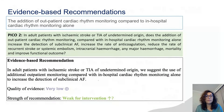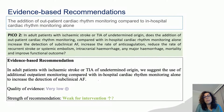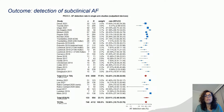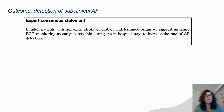Our second PICO is whether the addition of outpatient cardiac monitoring compared with in-hospital monitoring alone could improve our predefined outcomes. Our recommendation is that we suggest the use of additional outpatient monitoring compared to just in-hospital monitoring to increase the detection of subclinical AF. This is with a very low quality of evidence and a weak recommendation, mainly based on observational studies. We also suggest initiating EKG monitoring as early as possible during the hospital stay to increase the rate of AF detection.